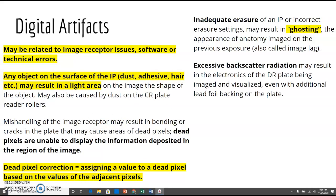A potential artifact using CR cassettes is when the plate doesn't erase completely. You'll see remnants of other anatomy or someone else's lead marker — it's sometimes called ghosting. It just didn't erase properly. Or there could be excessive backscatter radiation, which deals with the lead foil backing on the plate.